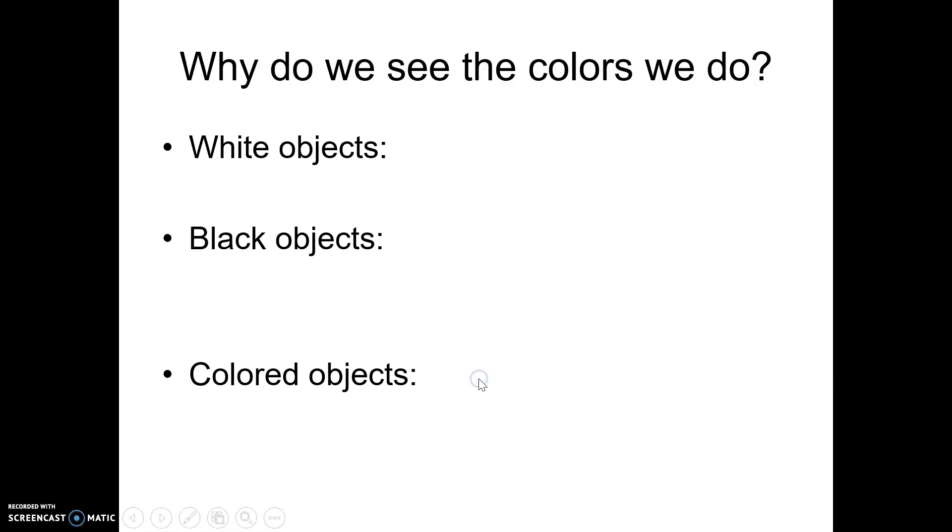So why do we see color? We see white objects, we see black objects, we see colored objects. Why do you see something that's white? Hopefully you remember from freshman physics that if you see something white, really you're seeing all of the colors of the rainbow being given off or reflected to your eyes.